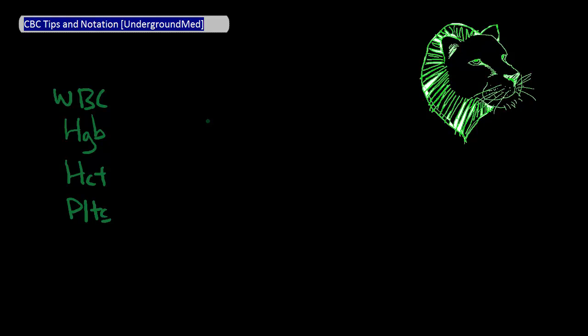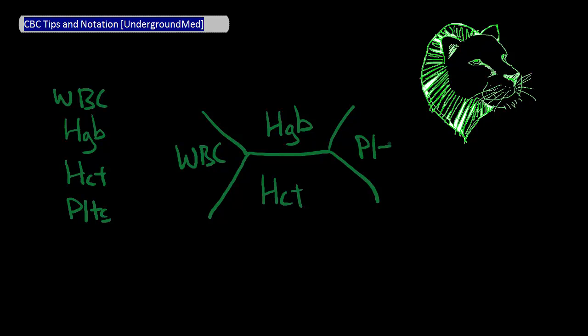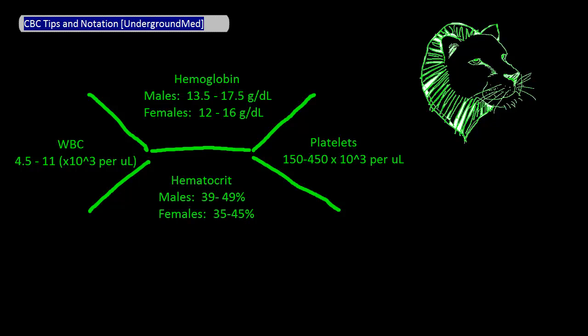Often, when people jot these down on a piece of paper in short notation, they will write them out like this, in which WBC goes here, hemoglobin goes here, hematocrit goes here, and platelets go here. The normal values of these are listed here for your reference. But note that the normal range can vary depending on your hospital's lab and other variables.